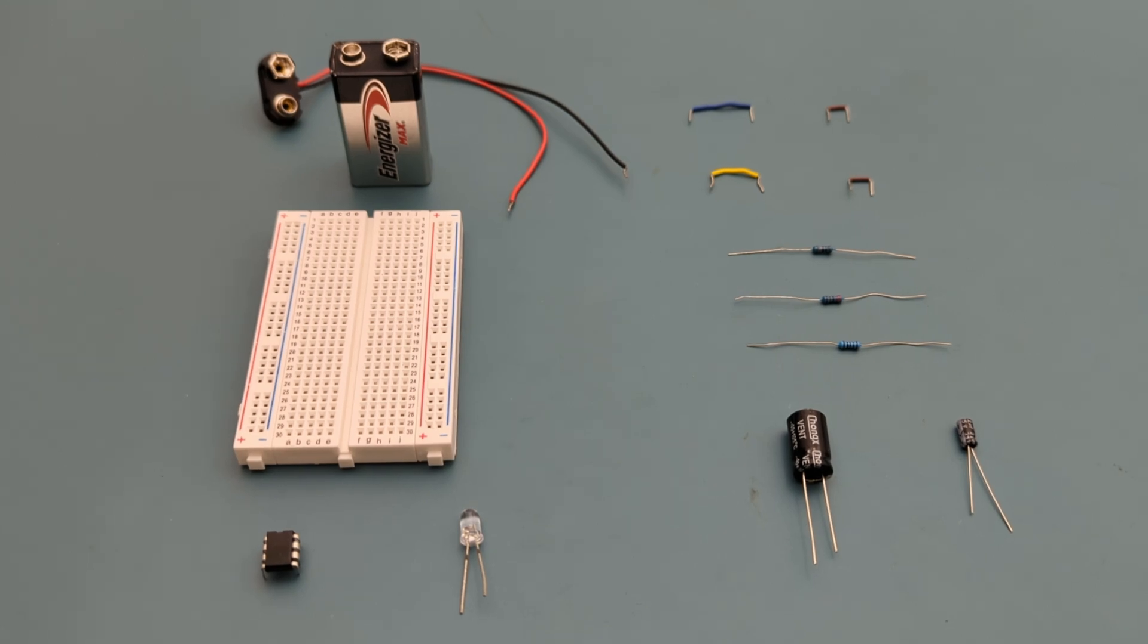Here are all the components you need to set up this circuit: 4 jumper wires, 1 100,000 ohm resistor, 1 2,200 ohm resistor, 1 100 ohm resistor, 1 1,000 microfarad capacitor, 1 22 microfarad capacitor,